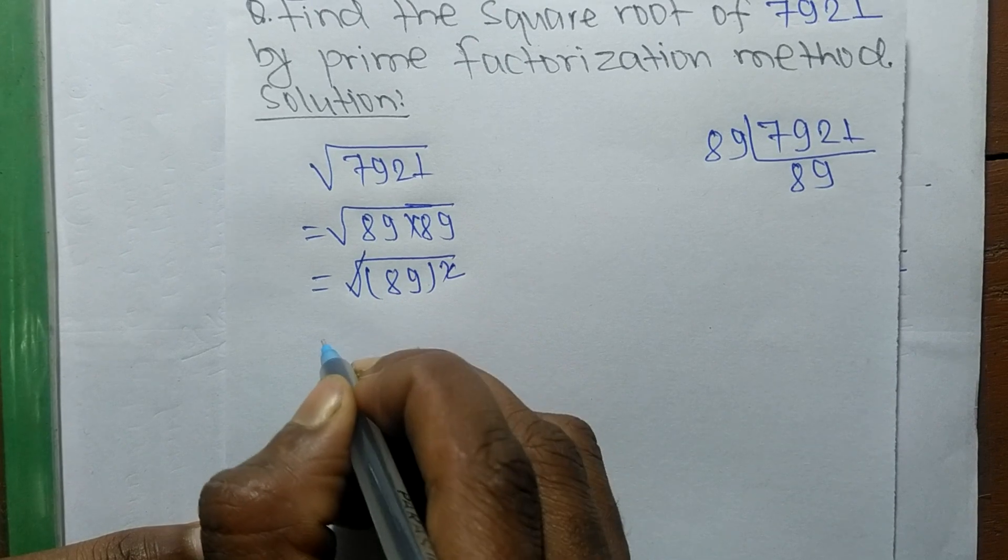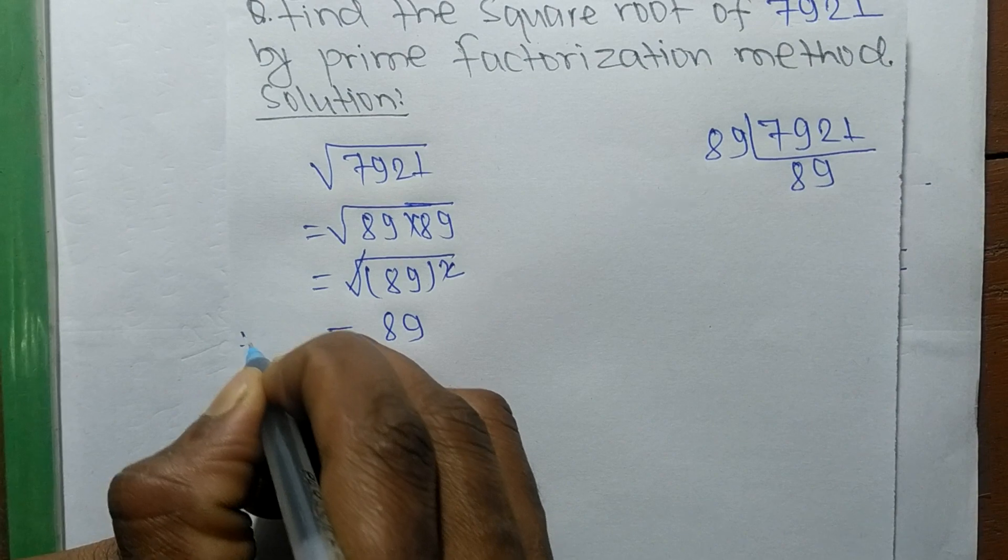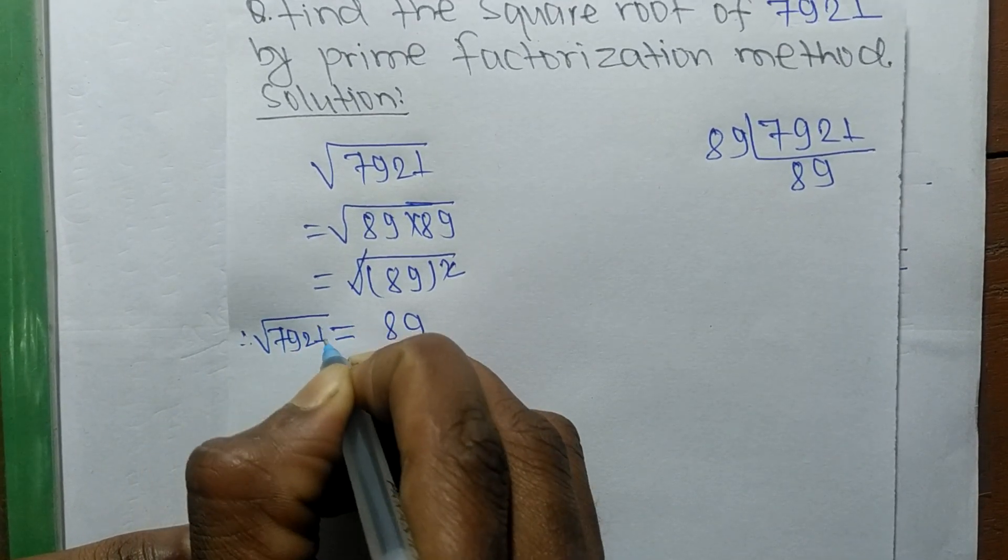Square and square cancel each other, so remaining one is 89. Therefore, the square root of 7921 is equal to 89.